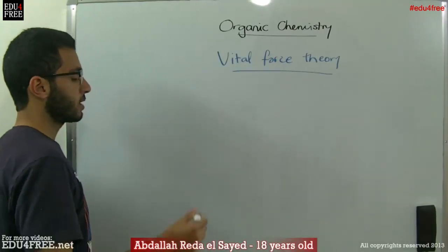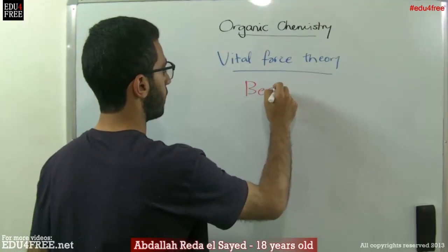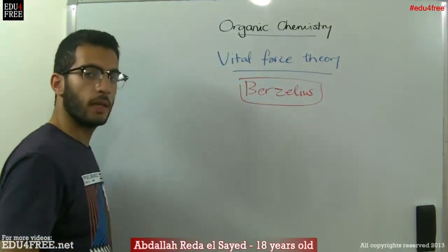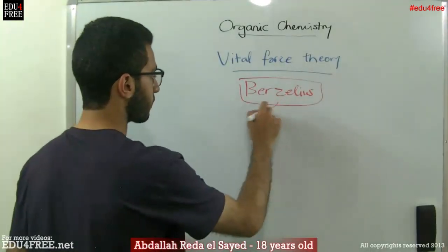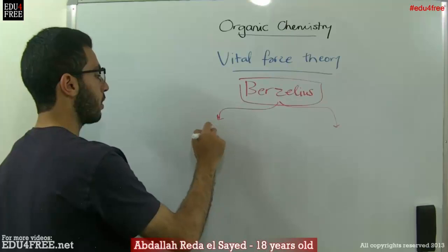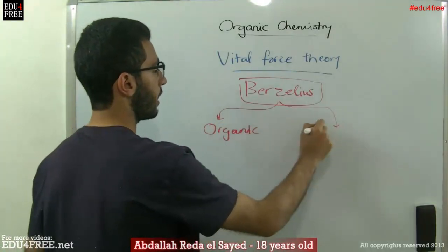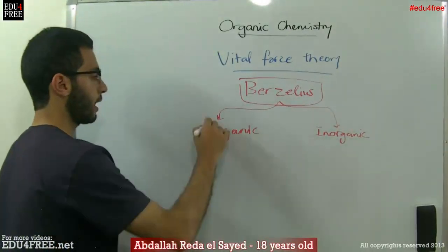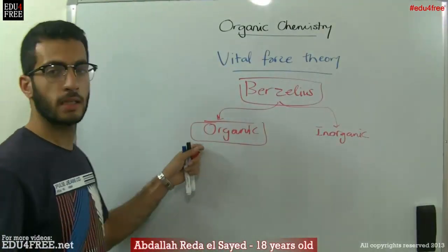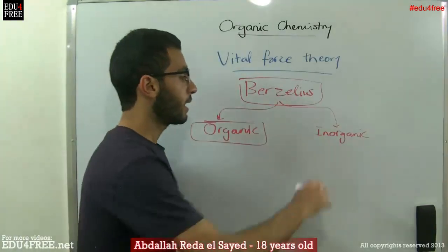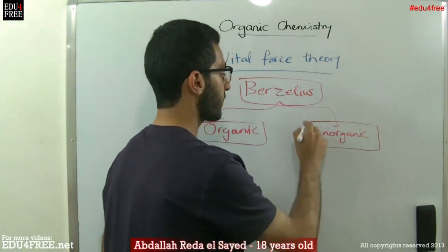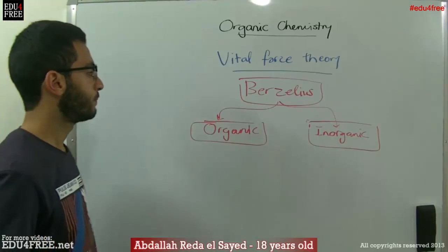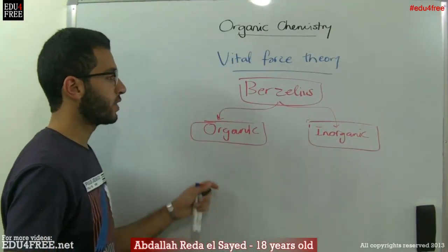There was a scientist called Berzelius in the beginning of the 19th century. Berzelius classified the compounds into two groups: organic compounds and inorganic compounds. Organic compounds are the ones extracted from organic origins like plants, animals, and humans. Inorganic compounds are those made from metals from the earth's crust and so on.